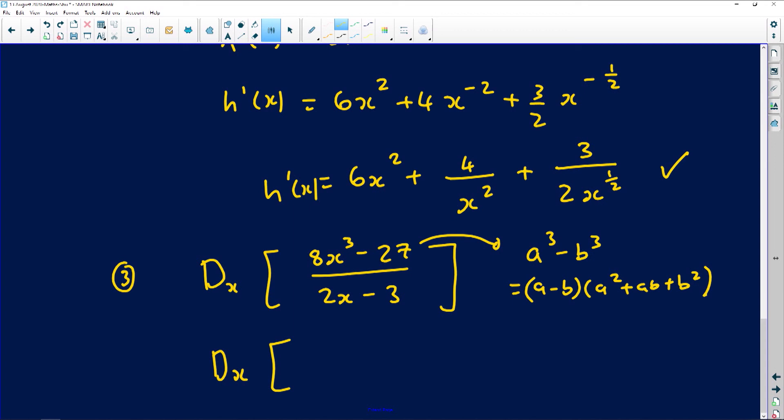So which means my 8 is going to be 2x minus 3. And then square the first one, we get 4x squared. Multiply them. Change the sign. You're going to get plus 6x. Square the last one, you get 9. And then everything is divided by 2x minus 3.